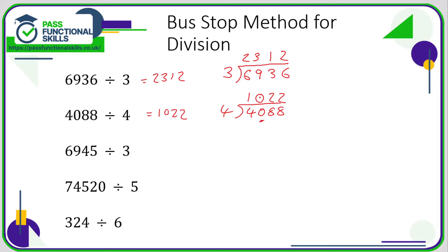Let's try 6945 divided by 3. 6 divided by 3 is 2, 9 divided by 3 is 3, 4 divided by 3 is 1 with a remainder of 1. I write 1 here, and that remainder of 1 gets parked on the next number, so the 5 becomes 15. Now it's 15 divided by 3, which is 5. And that is our answer.